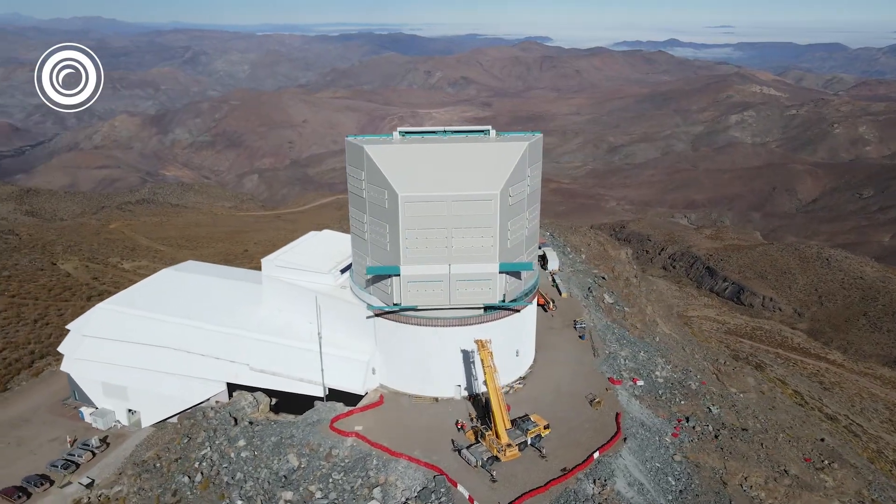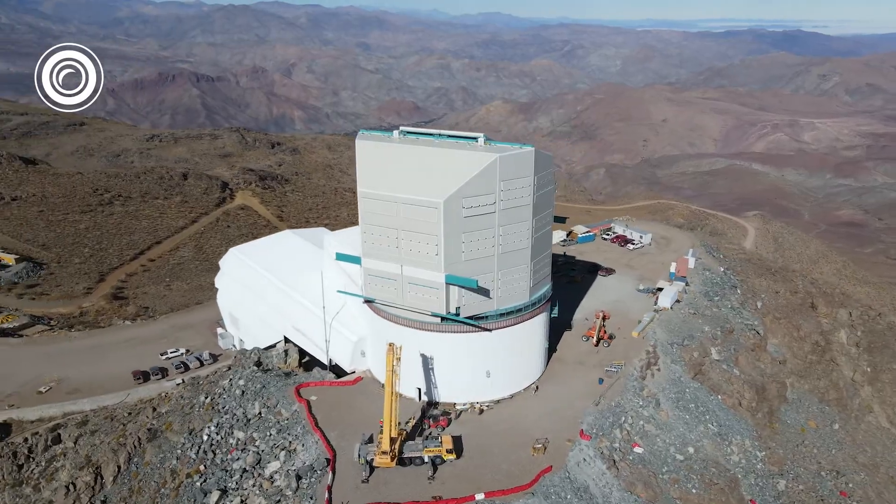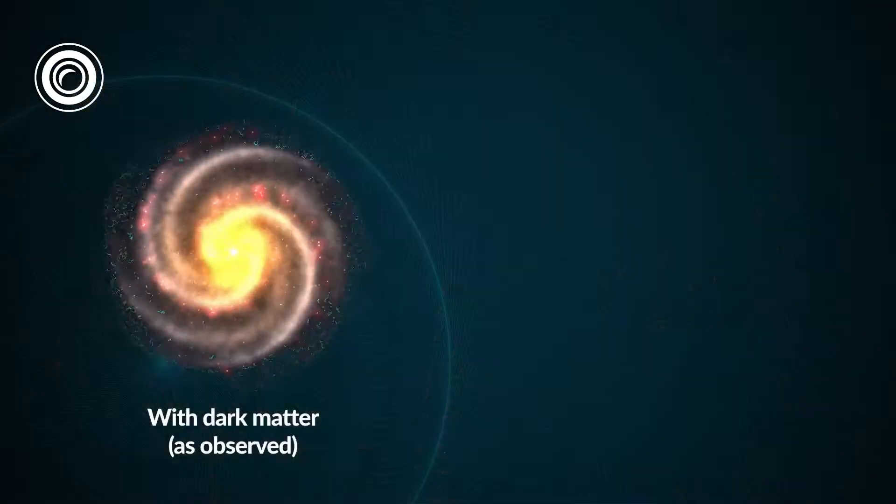Our story today starts in the late 1990s, when the idea for what would become the Vera C. Rubin Observatory started to emerge. At the time, researchers were looking for ways to explore dark matter.